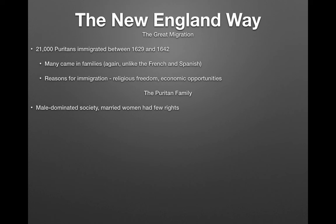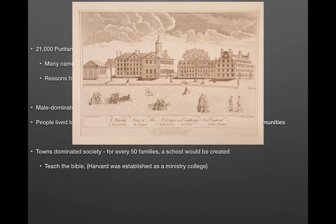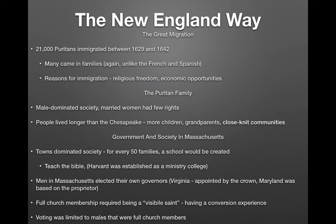Puritan society was male-dominated and married women had few rights. People lived longer in New England than in the Chesapeake, resulting in more children, more grandparents, and close-knit communities. Towns dominated society rather than plantations. For every 50 families, a school would be created to teach the Bible. Harvard was the first college established as a ministry college. Massachusetts elected their own governors, such as John Winthrop, while Virginia's governors were appointed by the Crown, and Maryland's by the proprietor. Full church membership required a conversion experience.